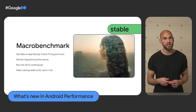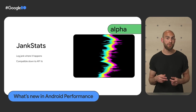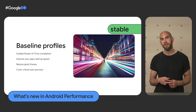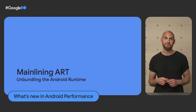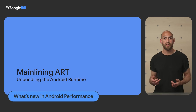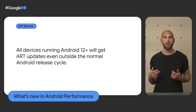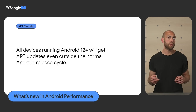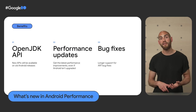We show how to use the Macrobenchmark Library to instrument key flows such as app startup, and the JankStats library to identify, attribute, and report janky frames as they happen in the field. Next, we cover what baseline profiles are and how adding them can offer impressive performance improvements to app startup and key flows — you really have to check this out. Finally, in Android 12, ART became a mainline module, meaning any device running Android 12 and above will get ART updates outside the Android release cycle, enabling OpenJDK API updates, performance updates, and bug fixes. Check out 'What's New in Android Performance' for more details.